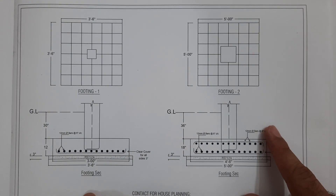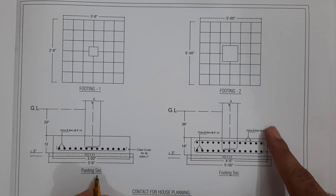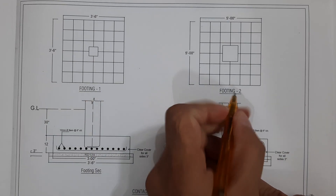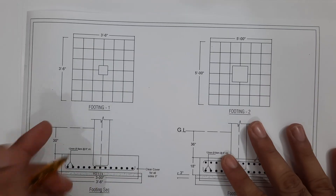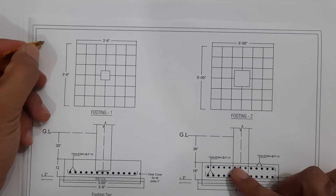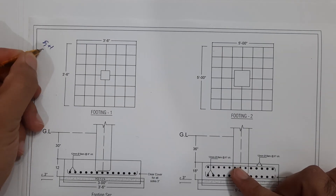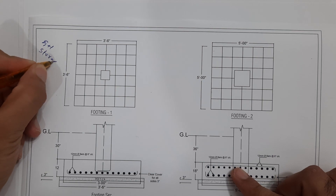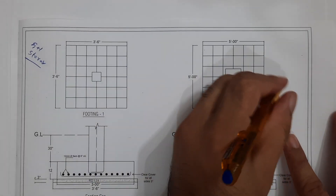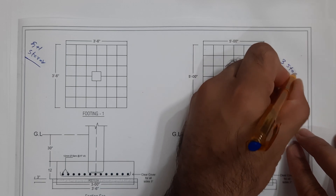As you can see, we have two types of footing here. This is footing one and this is footing two. I designed footing one for a G+1 (two-storey) building, and footing two for a three-storey (G+2) building.